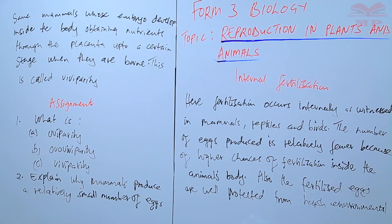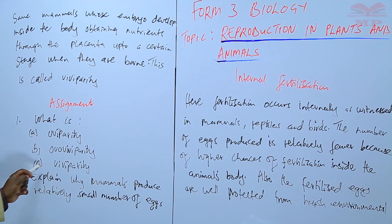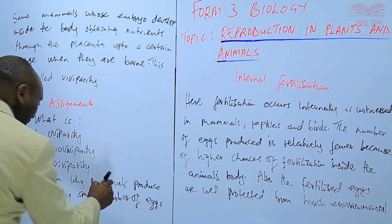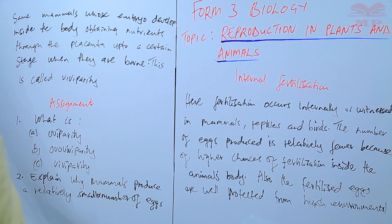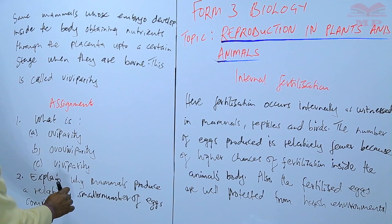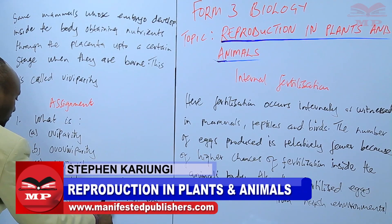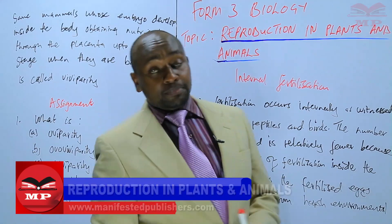So we are going to have an assignment. Question one: define (a) oviparity, (b) ovoviviparity, and (c) viviparity. Question two: explain why mammals produce a relatively smaller number of eggs compared to amphibians. We are going to stop there until next time. Goodbye.